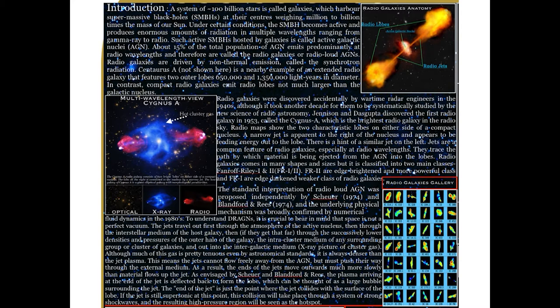Such active supermassive black holes hosted by galaxies are called active galactic nuclei or AGN. About 15% of the total population of AGN emit predominantly at radio wavelengths and therefore they are called giant radio galaxies or radio-loud AGN. Radio galaxies were discovered accidentally by radar engineers in the 1940s although it took another decade for them to be studied systematically.